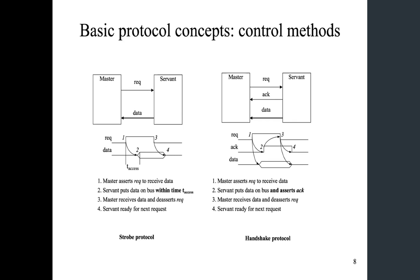There is no complicated communication because everybody agrees upon this t-access time. That's why when you read timing diagrams in a data sheet, you pay attention to this t-access time. When you have two components on the same circuit, you want to make sure that the t-access time is followed if this is a strobe-type protocol.